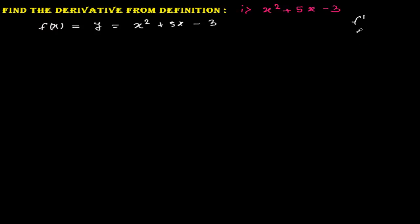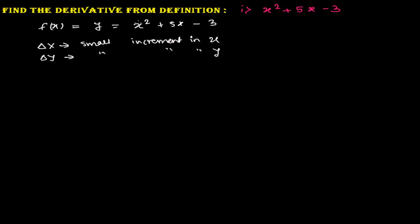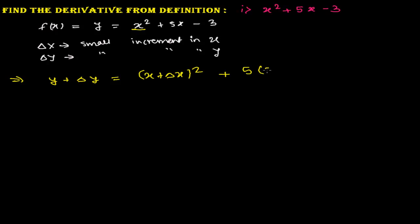Let's start. Let me suppose delta x is a small increment in x, and similarly delta y is a small increment in y. The function we are working with is y = x² + 5x − 3. In some books you might see this written as f(x), and some books may use h instead of delta x — don't be confused by that. I find delta x and delta y a bit more standard and easier to work with.